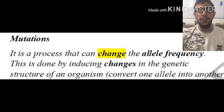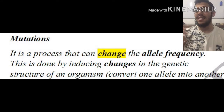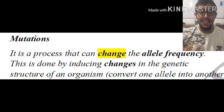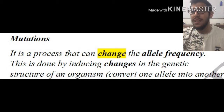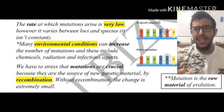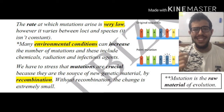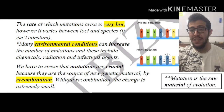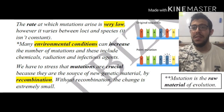First of all, we have to know that a mutation, in essence, is a process that can change the allele frequency. It is done by inducing changes in the genetic structure — the change of nucleotides of an organism — simply converting one allele into another. The rate at which mutations arise is extremely low; however, it varies between loci and species, so it is definitely not constant between any of these two parameters.